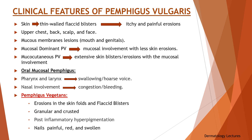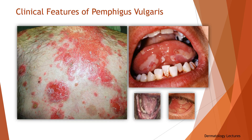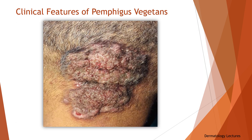In pemphigus vegetans, which is a variant of pemphigus vulgaris, the flaccid blisters that become erosions in the intertriginous areas and on the scalp or face may develop into vegetative lesions, forming fungoid vegetations or papillomatous proliferations that are granular and crusted. The lesions heal with post-inflammatory hyperpigmentation. The skin around the nails may be painful, red, and swollen. Here you can see thin-walled flaccid blisters on the back of the patient and mucosal involvement, and vegetative lesions on the back of the neck in pemphigus vegetans.